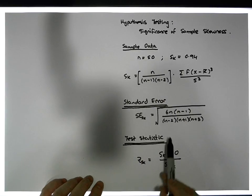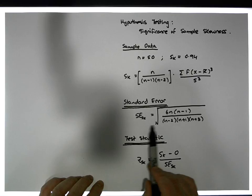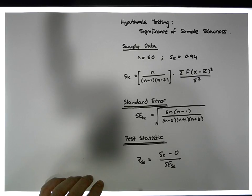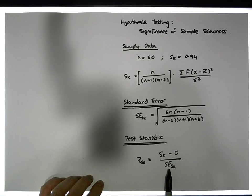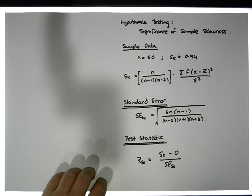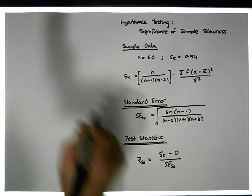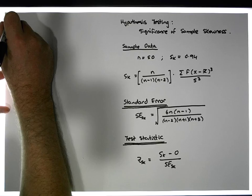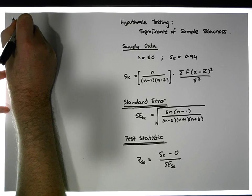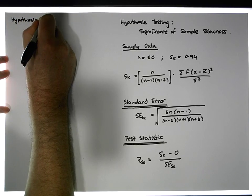We know the sample size is 50, so we can calculate the standard error for this particular sampling distribution. We know the skewness value, so we can calculate the test statistic — it's quite straightforward. So the hypothesis test itself has five steps.